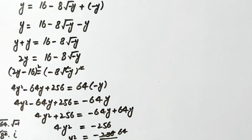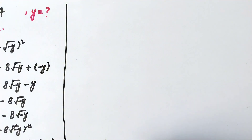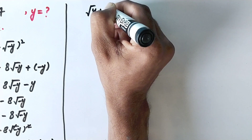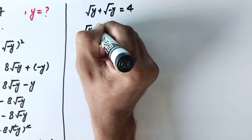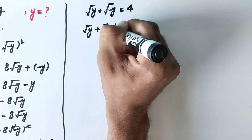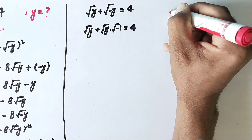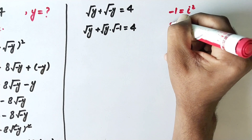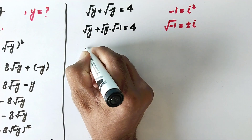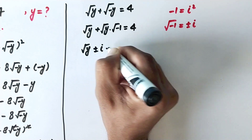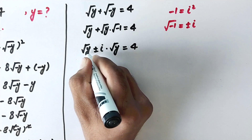Now we can solve this problem by another method. We write square root of y plus square root of negative y is equal to 4. We can write this as square root of y plus square root of y times square root of negative 1 is equal to 4. Recalling that negative 1 is equal to i squared, or square root of negative 1 is equal to plus or minus i, so square root of y plus or minus i times square root of y is equal to 4.